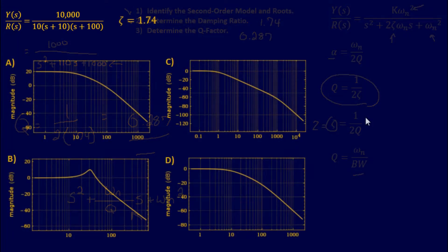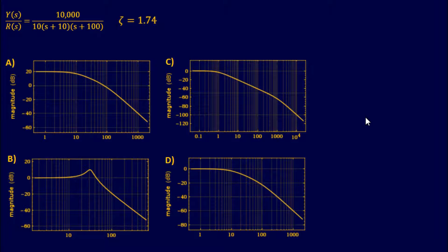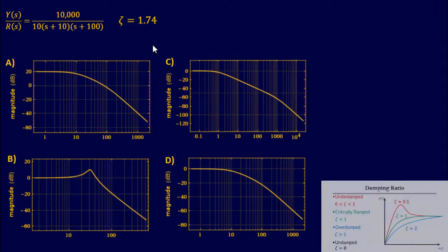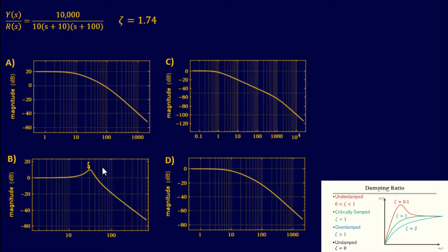Let's do another problem. This next example is a bit more interesting — we'll look at what the transfer function looks like in a Bode plot. We'll use the same transfer function from the previous example, where we already determined the damping ratio. The task is to identify which of four Bode plots — A, B, C, or D — corresponds to this transfer function.